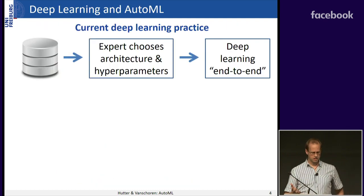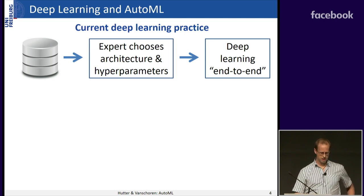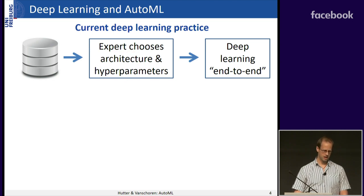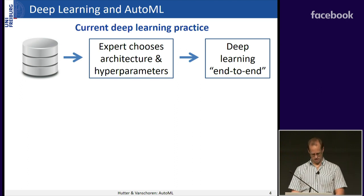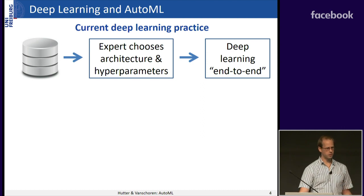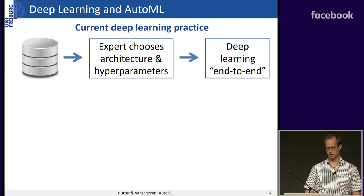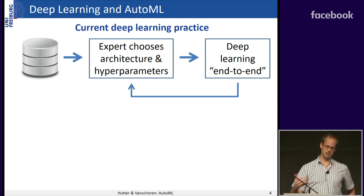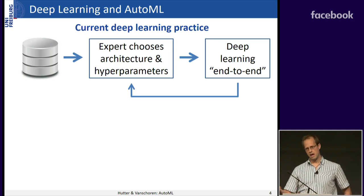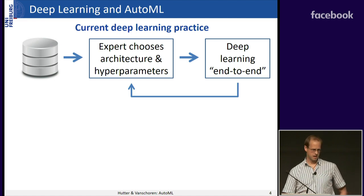That leads to the current state of deep learning practice. Given a new dataset, you need an expert who chooses the architecture and hyperparameters that work well. Even experts don't always know exactly how to choose architectures and hyperparameters for a new dataset. You end up with an iterative loop with a human expert exploring that space in order to get a nice deep learning system with state-of-the-art performance.